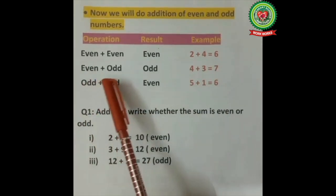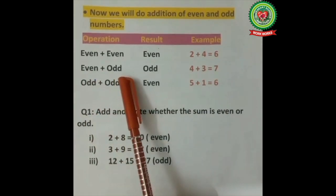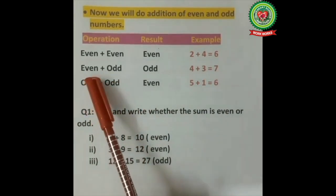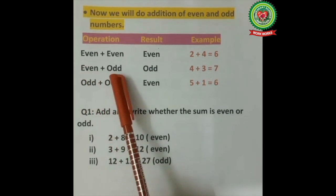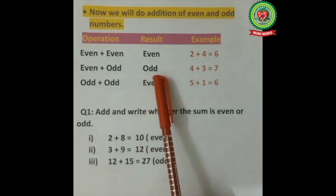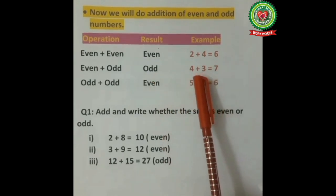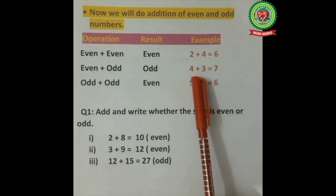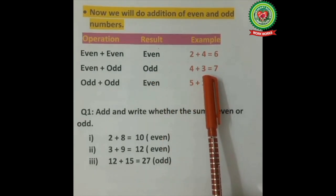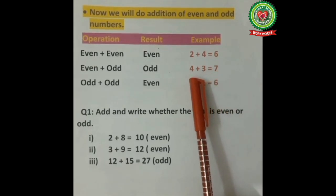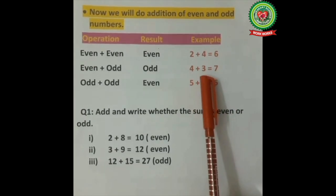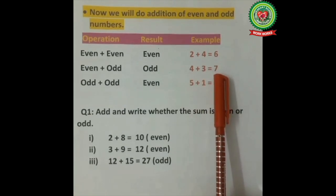Second: even plus odd — when we add one even number with an odd number, we get an odd number as the answer. For example, 4 plus 3 equals 7. Here, 4 is even and 3 is odd, so the answer is also odd.